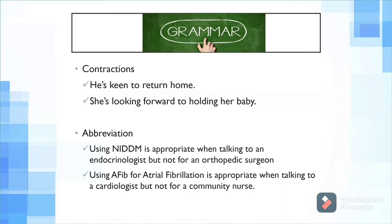Regarding abbreviations, it's really important to consider the reader when deciding when and where to use them. For example, using IDDM — insulin-dependent diabetes mellitus — is appropriate when writing to an endocrinologist but not for an orthopaedic surgeon. Similarly, using AFib for atrial fibrillation is appropriate when talking to a cardiologist but not for a community nurse, because globally there is more than one abbreviation for the same term. Always keep that in mind.